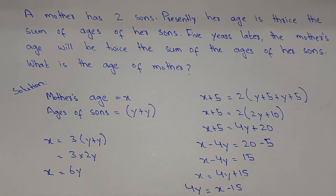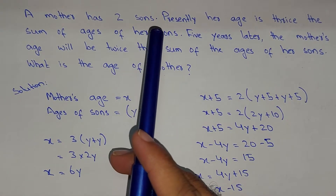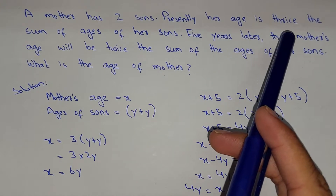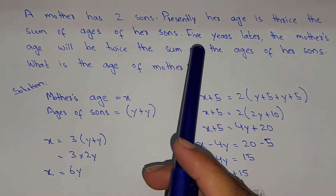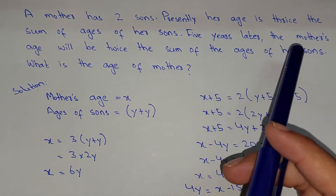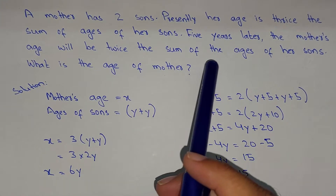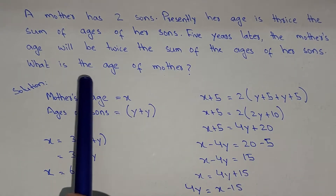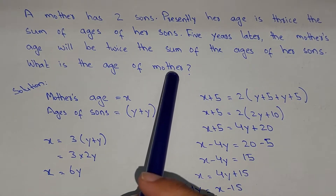Hello, what's up guys, welcome to the new video. In this video we will solve a problem related to age. The problem says: a mother has two sons. Presently her age is thrice the sum of the ages of her sons. Five years later, the mother's age will be twice the sum of the ages of her sons. What is the present age of the mother?